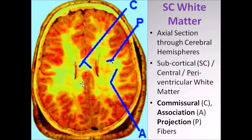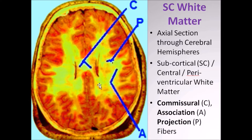Let's look at an axial section through the brain. When we take an axial section, we see first a thin rim of gray matter, which is referred to as the cortex, the cerebral cortex. But let's focus on this white matter here. This is referred to as the subcortical white matter, which becomes confluent with the central white matter and which merges with the periventricular white matter. This whole thing is composed of nerve fibers which are myelinated, and that's why it's referred to as the white matter.